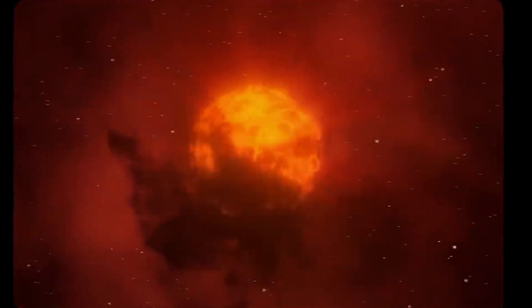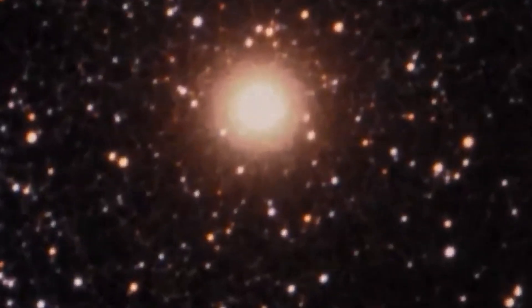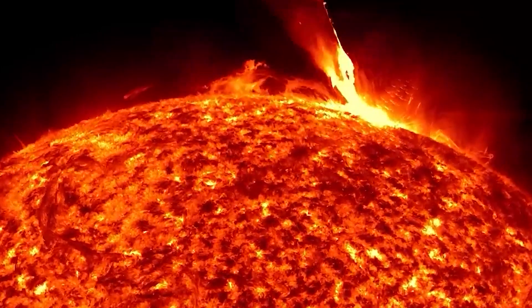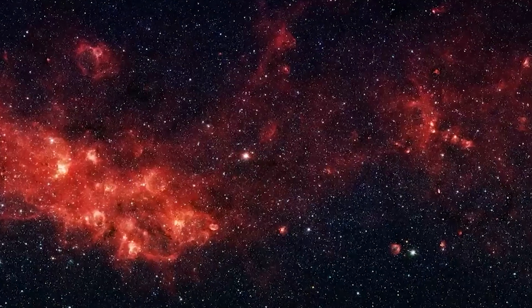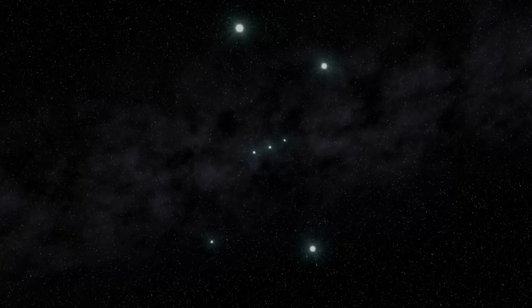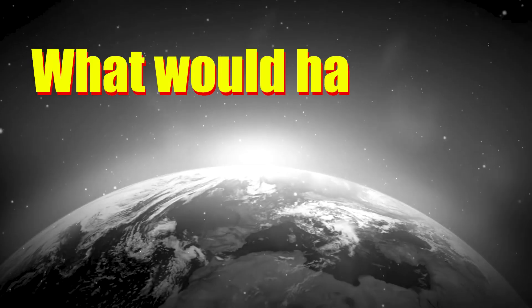Betelgeuse is near the end of its life cycle and, like many stars before it, will ultimately go supernova. This is not a maybe, it is a definitely. But in astronomical terms, this could still be hundreds of thousands of years away. But what if this explosion were to occur within our lifetime? What would happen?